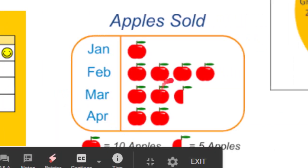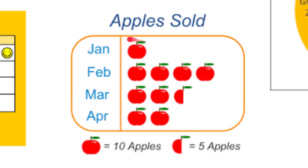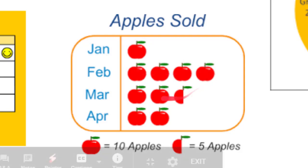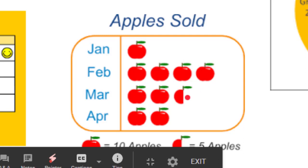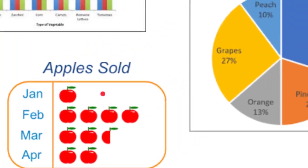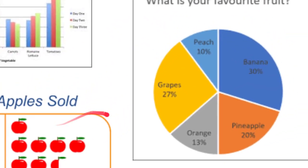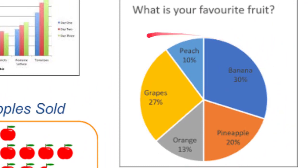You might also see it as a pictograph where every one of the apple images is worth 10. So there were 10 apples sold in January, 40 sold in February, 25 sold in March, and 20 sold in April. What's being described here is a qualitative feature — the month.